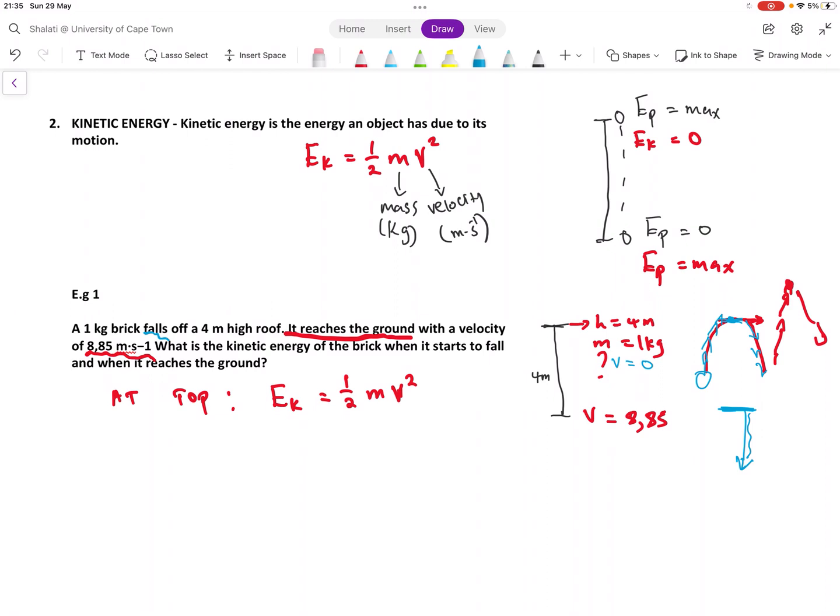Now you can calculate your EK, which is going to be 1 over 2. Your mass is 1 grams. Velocity is zero squared. So at the top, your velocity is zero. I mean, your kinetic energy is zero, so you have zero joules.